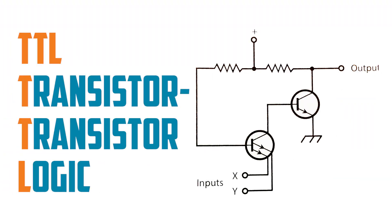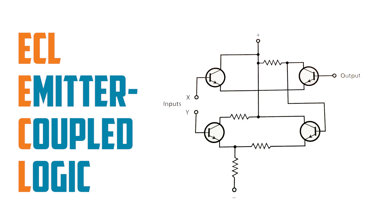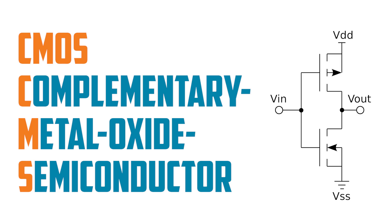When looking at logic circuits, you'll likely come across a few abbreviations that would be helpful to know. While these can be made with discrete components, they can often be found as an IC.